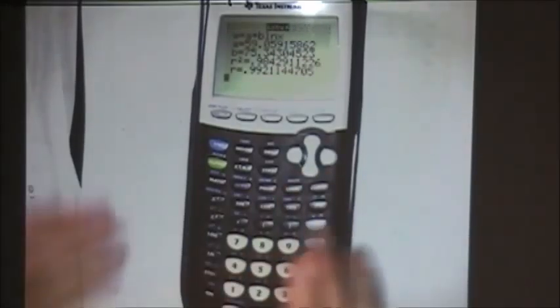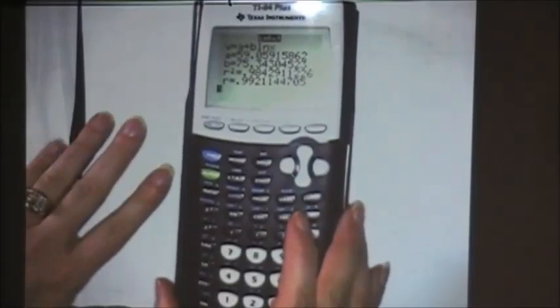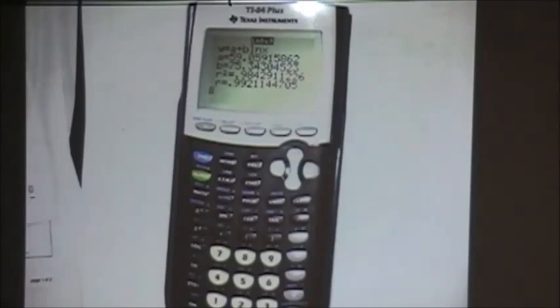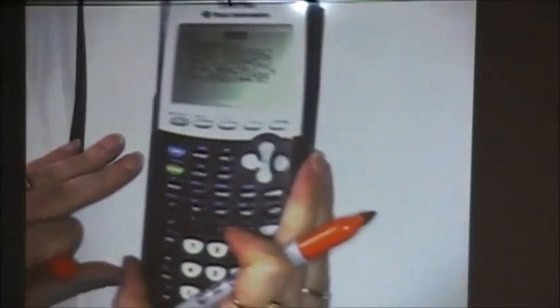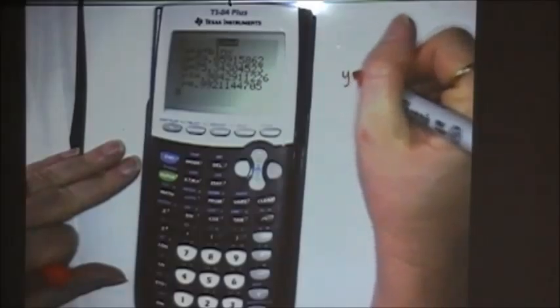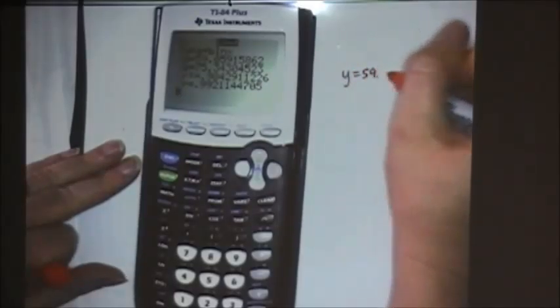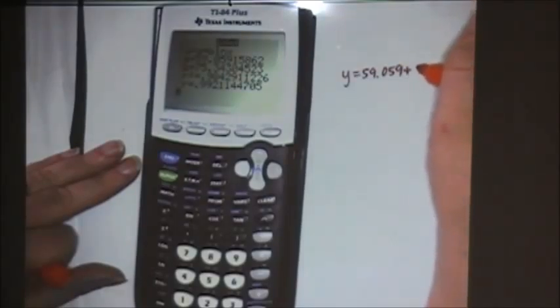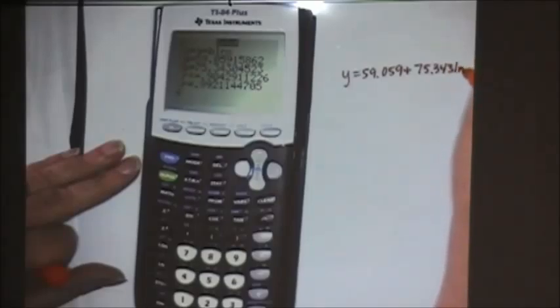And now when it calculates it, it gives me all this extra information. But what I really need is the 59, and on these, I just did one a minute ago on the computer, and it said to three decimal places. So I would plug in Y equals 59.059 plus 75.343 log X.